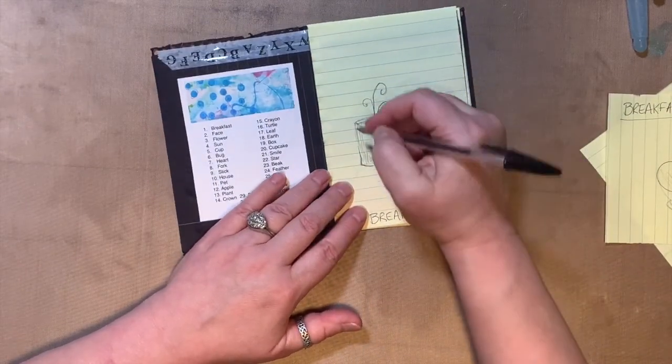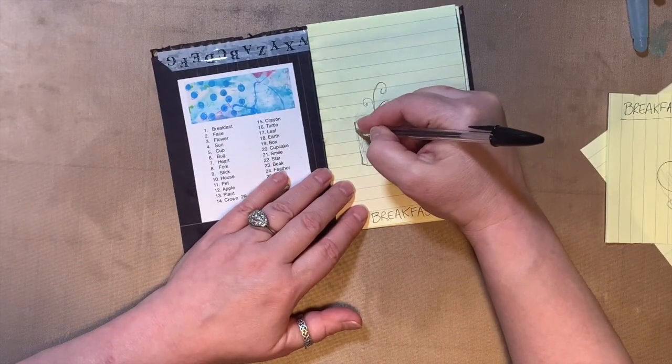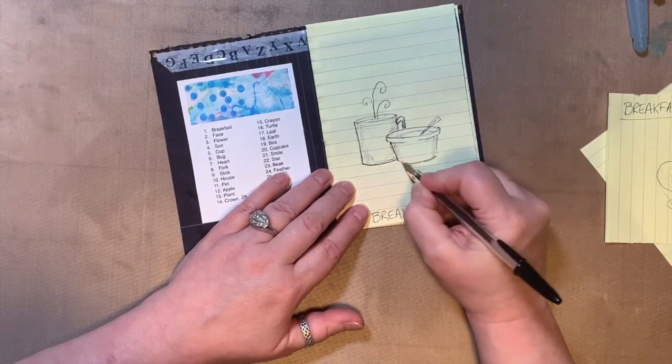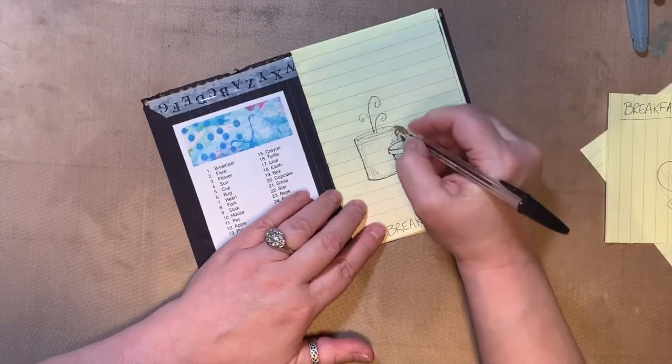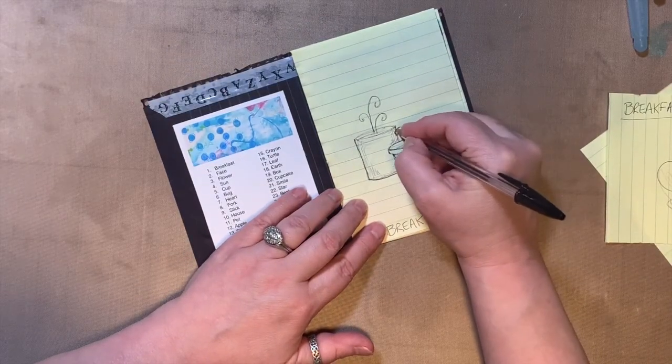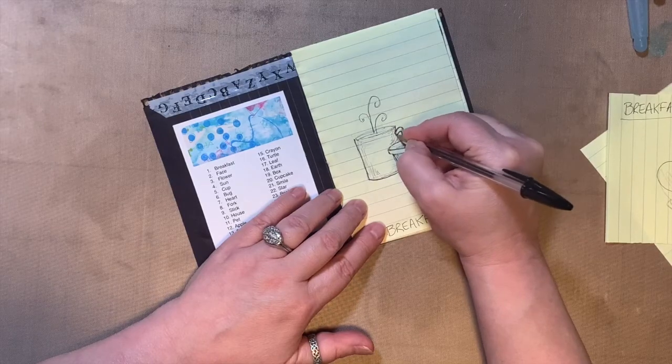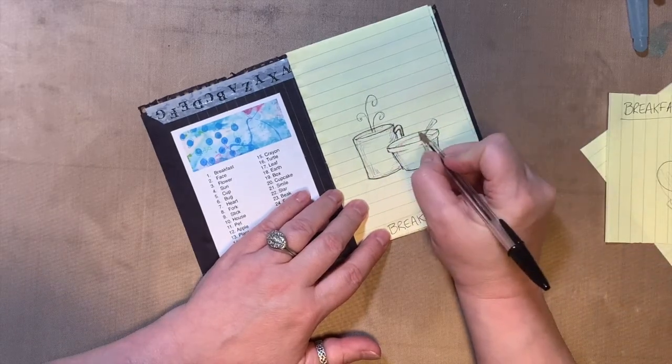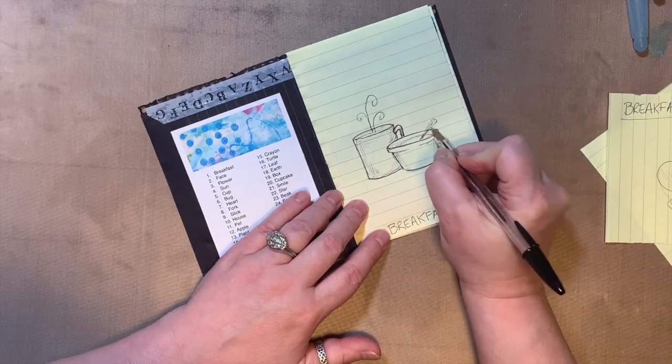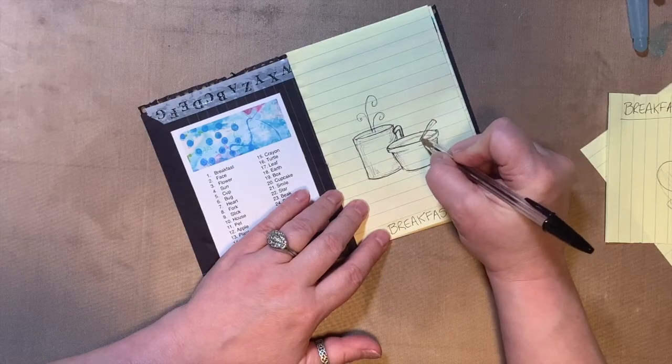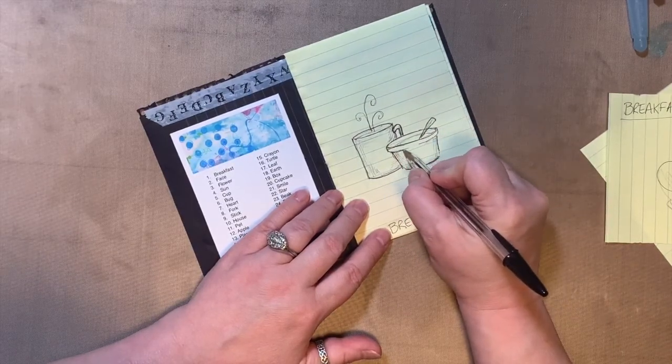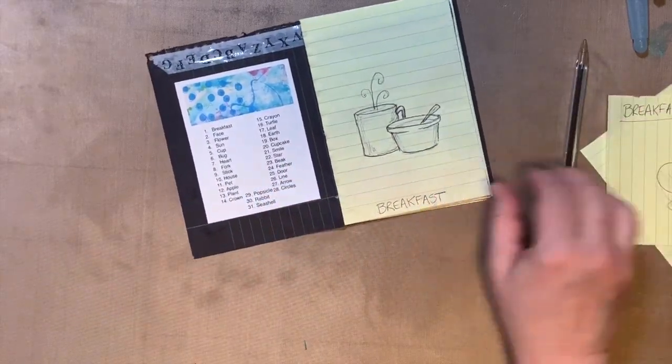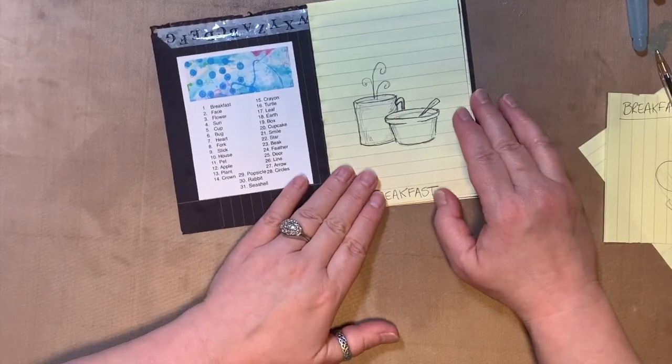I like the shapes of that, so now I'm going to darken some of them by just pushing a little harder with my pen, around some of the lines. That's pretty good.